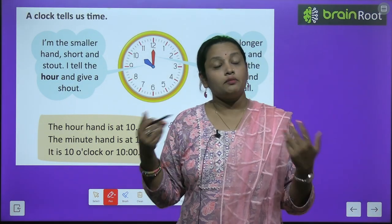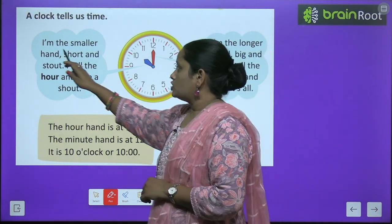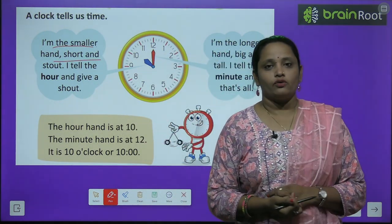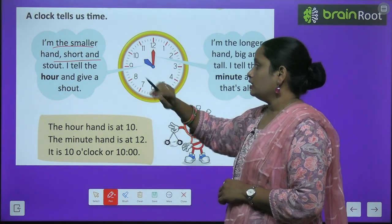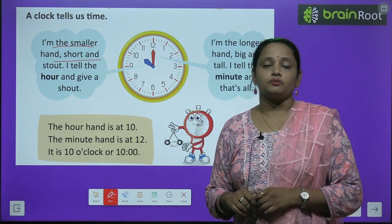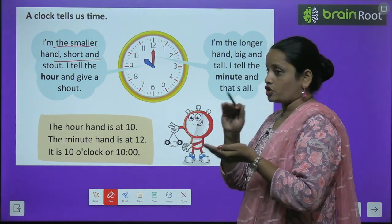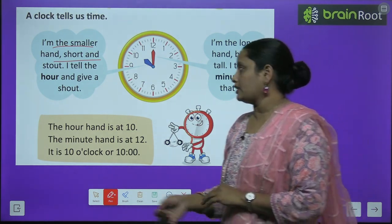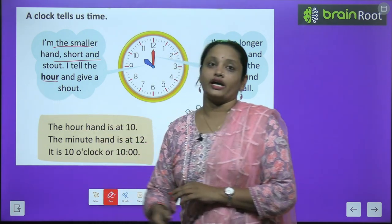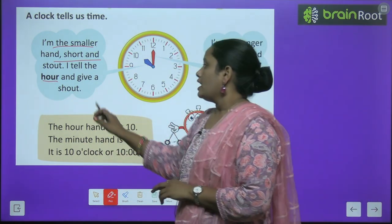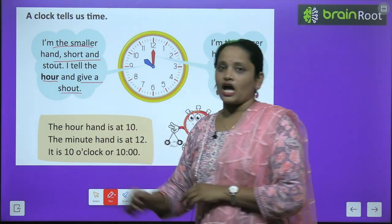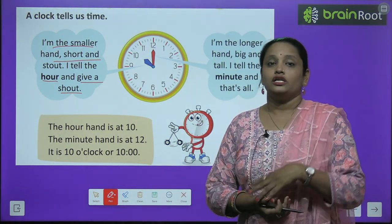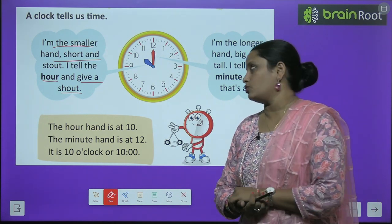So let's see what these two hands tell us. The blue hand says: I am the smaller hand, short and stout — मैं smaller hand हूँ, मैं short हूँ, stout हूँ। I tell the hour — मैं बताता हूँ कितने घंटे हो गए हैं, कितने hours हो चुके हैं। And when an hour completes, I give a shout — वरार पूरा हो जाता है, मैं चिलाने लगता हूँ, मैं shout करता हूँ।